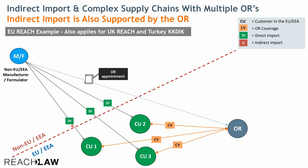This means that the manufacturer formulator is directly supplying the substance to these customers, and the only representative knows these customers and covers them. If a customer or importer is not known to the only representative, they cannot cover them. Therefore, the only representative must always know who the recipients of the substances are in a said market from the company that has appointed them as the only representative.